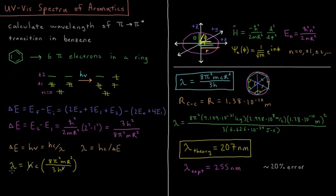So λ, our wavelength, is going to equal hc times 8π²mr² over 3h². So there's an h in the numerator here and an h² in the denominator, canceling those, leaving an h left over in the denominator. So the wavelength of the photon that we're going to absorb in this system is going to equal 8π² times the mass of the electron times the speed of light times the radius of our benzene molecule divided by 3 times Planck's constant.